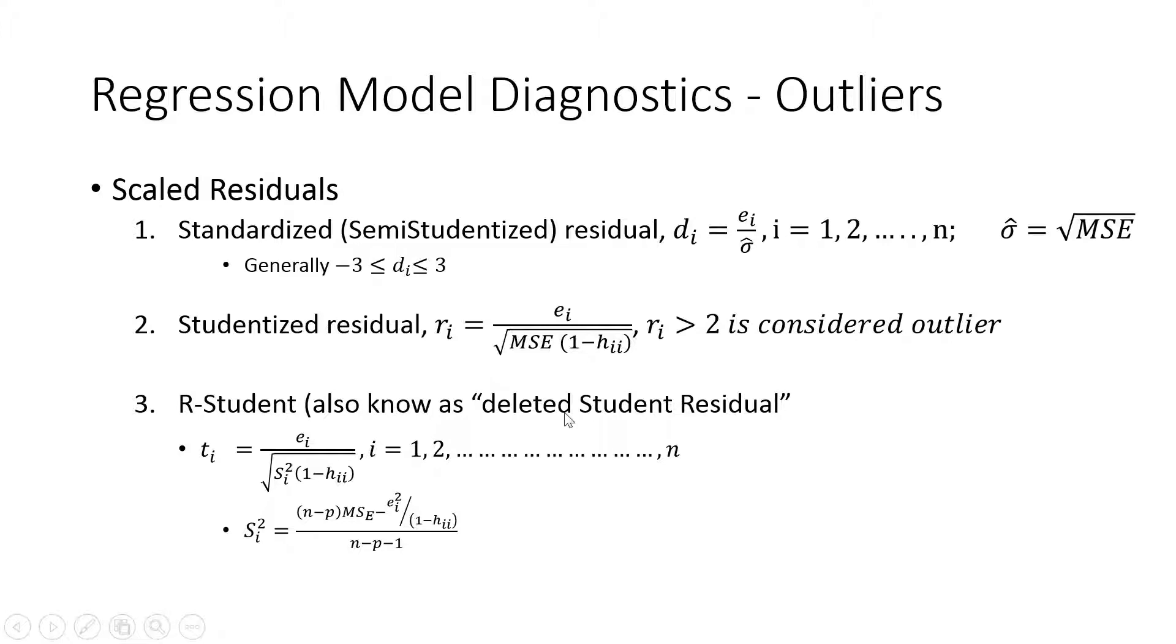There are two primary tests for outliers. One is the studentized residuals, which is ri equals ei divided by square root of MSE times one minus the diagonal element of hat matrix. Now all these jargons, we don't have to worry about it. We're going to get every single of these values from statistical software.